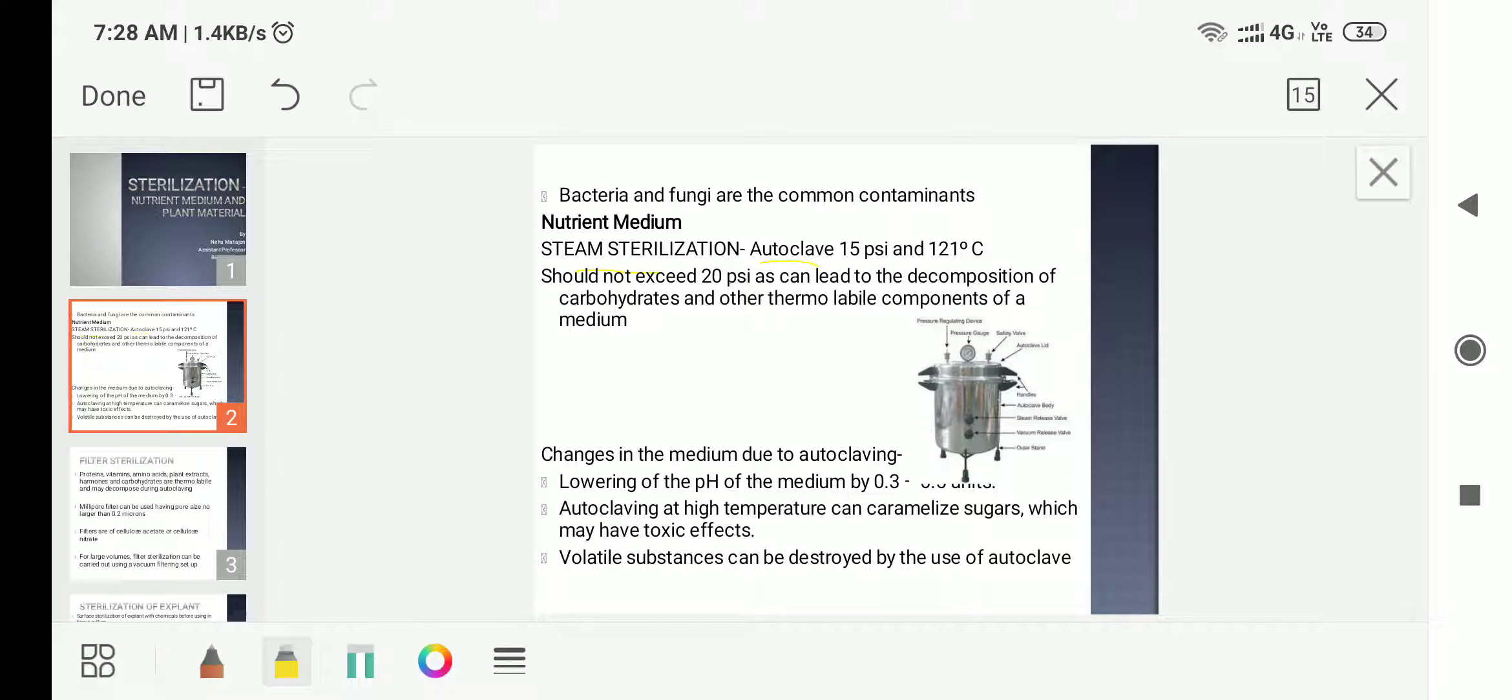In this autoclave, the pressure is usually kept at 15 pounds per square inch and the temperature is 121 degrees Celsius. However, in any case, the pressure should not exceed 20 psi units. The reason being if you exceed the pressure, it will lead to decomposition of carbohydrates and other thermolabile components which are temperature sensitive.